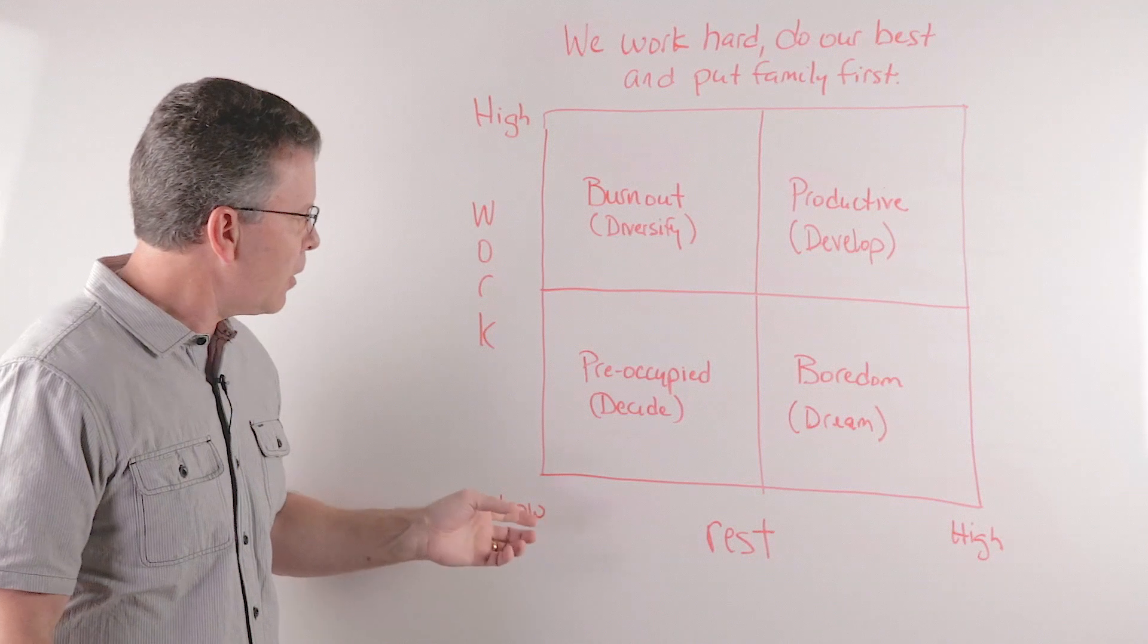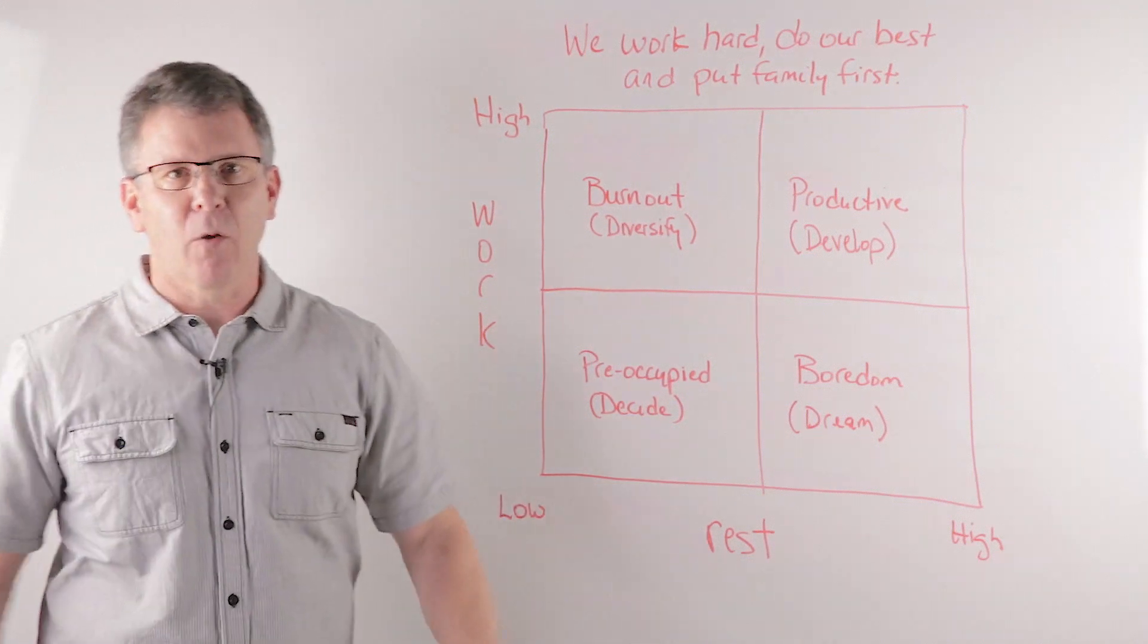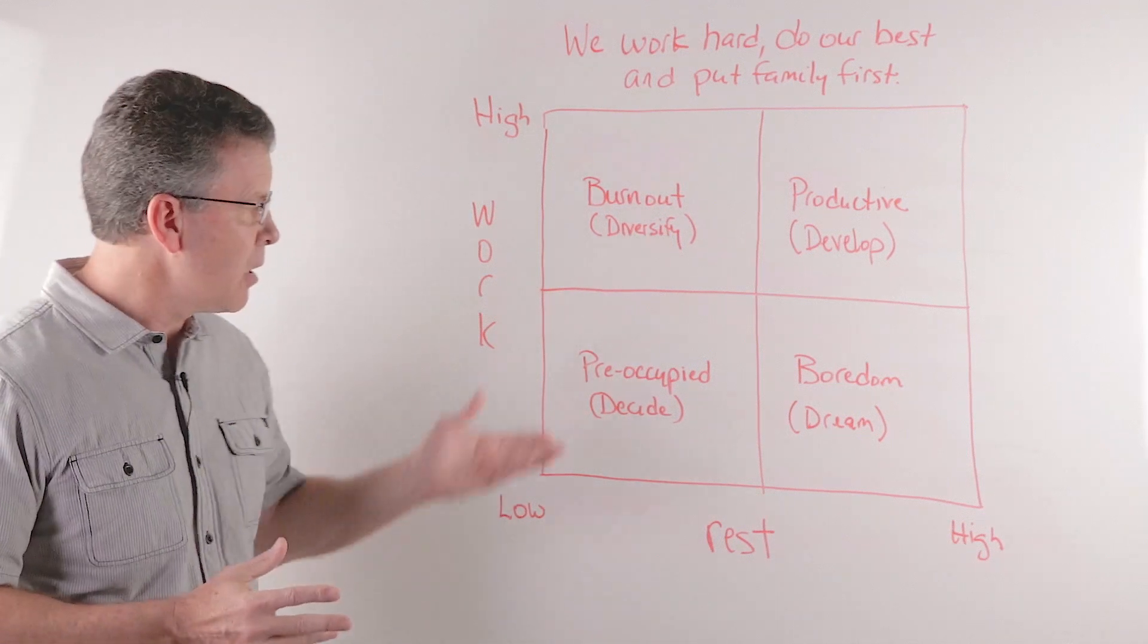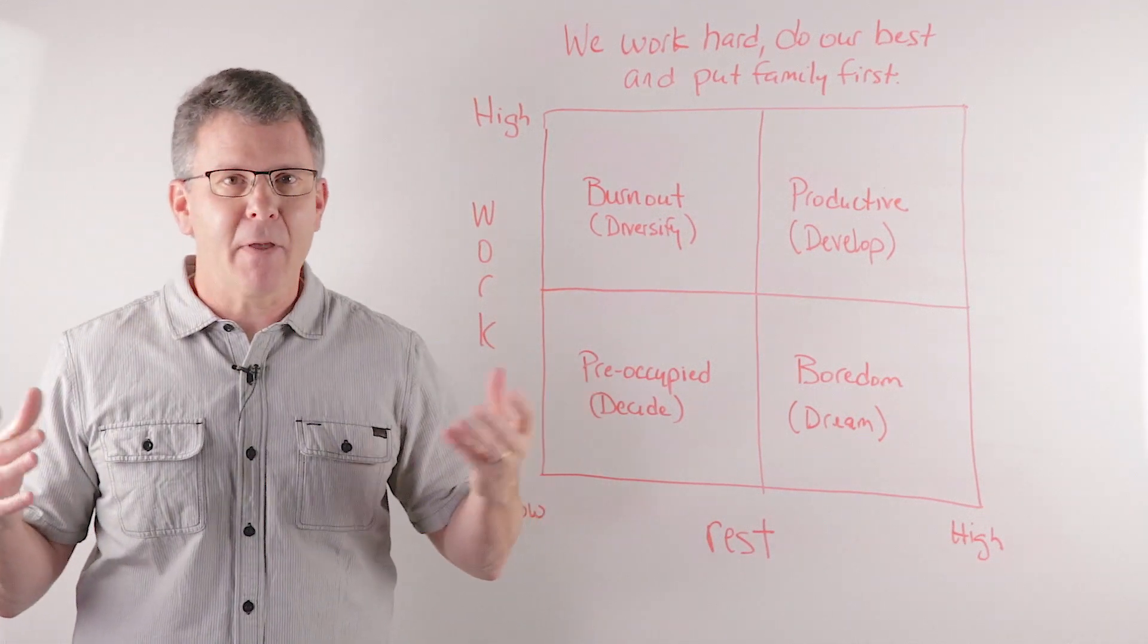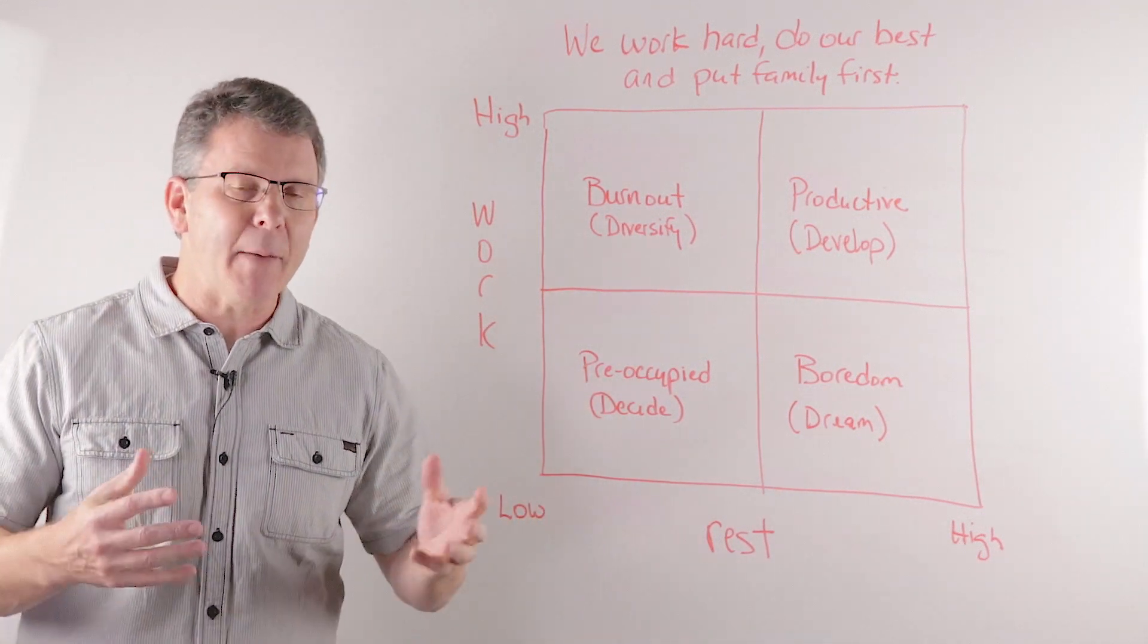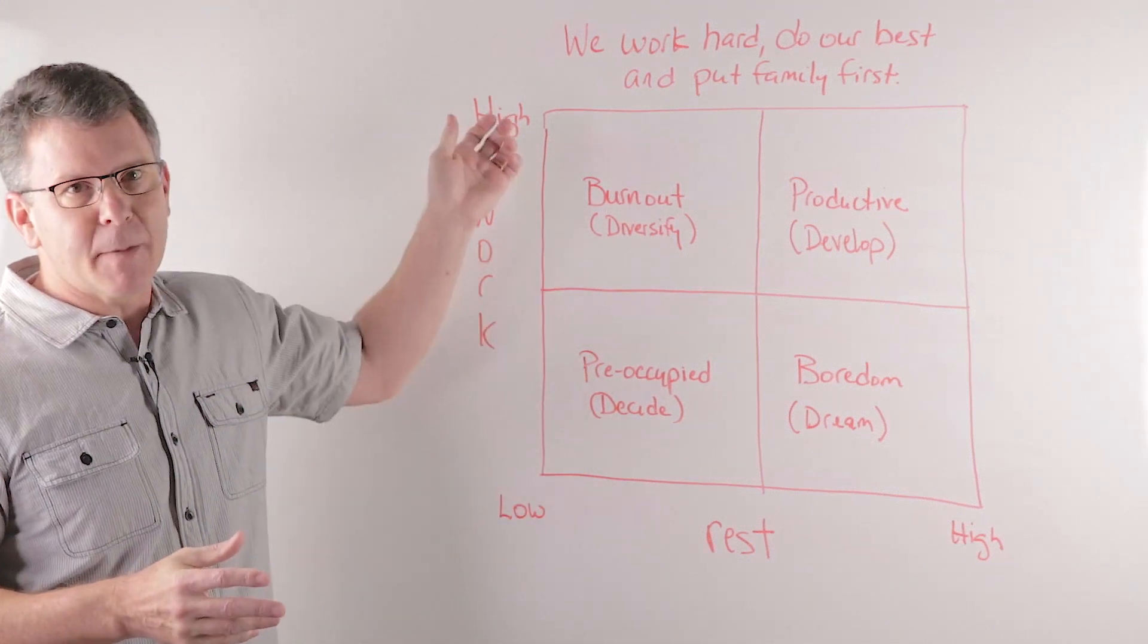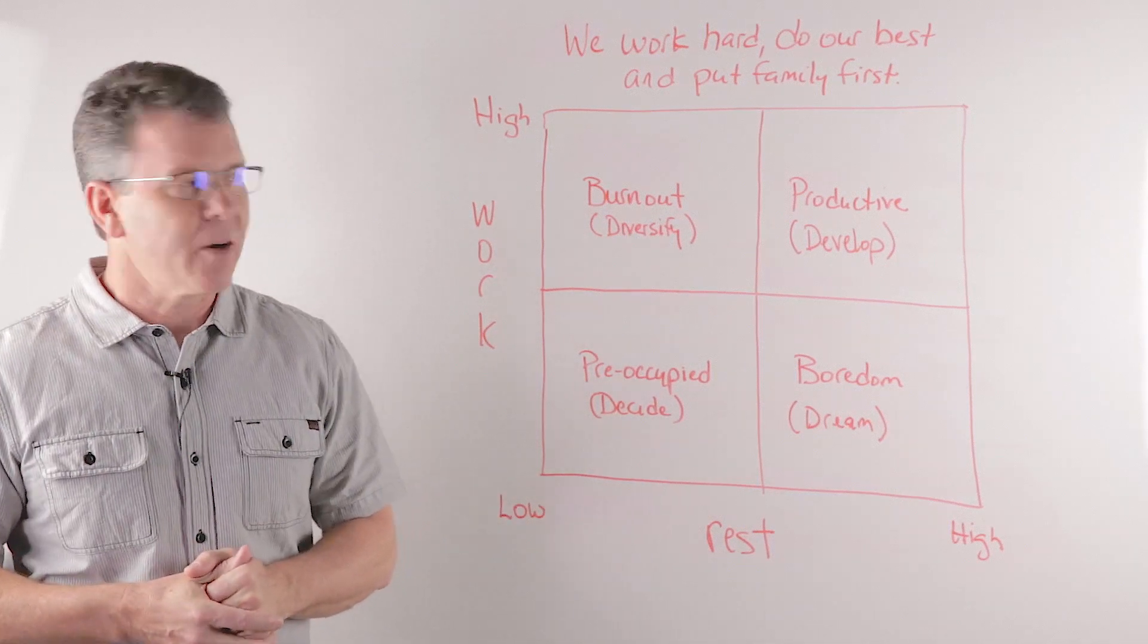And there's these other people that are low on rest and low on work. They don't work hard, but they don't rest well either. And so what do you call those people? Well, they're preoccupied. Maybe they're a gamer. Maybe they have some sort of hobby. Maybe there's something else they do that's just got their attention, but it doesn't provide the income that they need. It doesn't provide the rest that they need either.